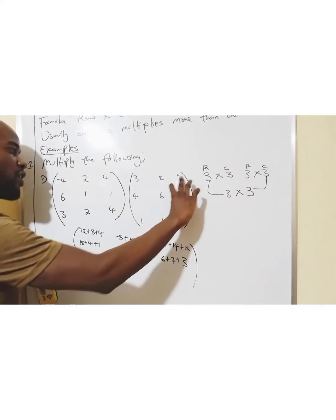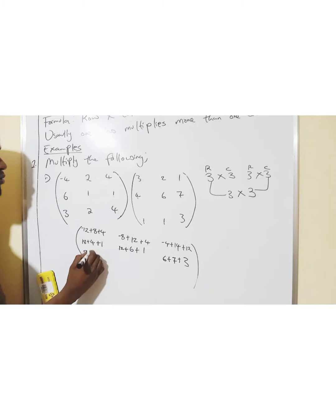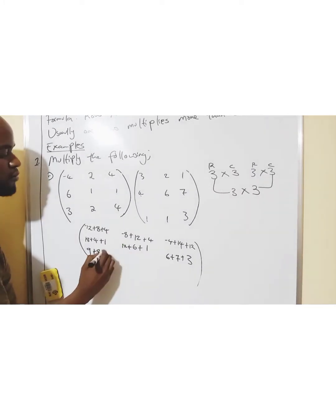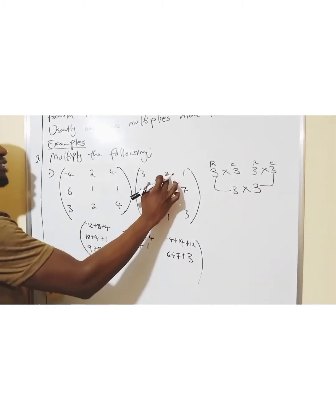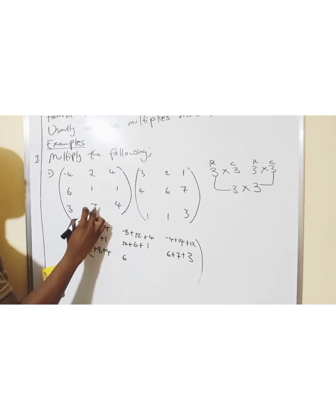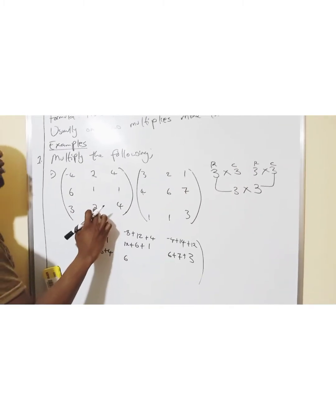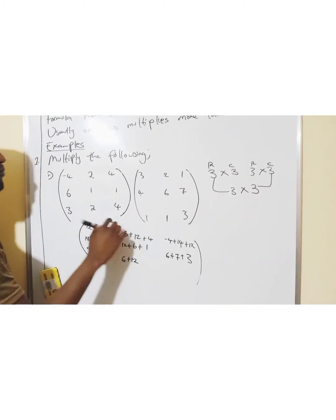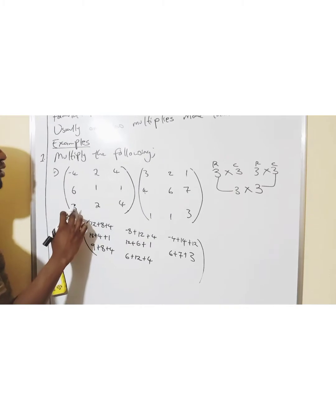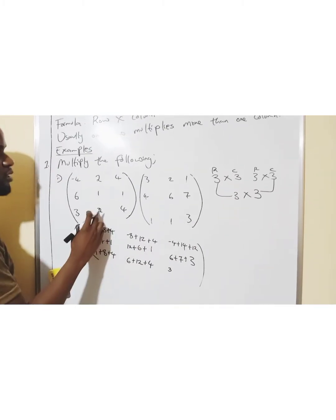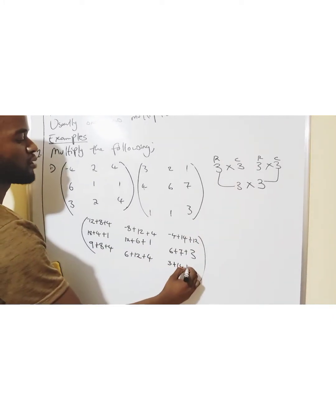I'll multiply the same 3 columns. So, 3 times 3 is 9. 2 times 4 is 8. 4 times 1 is 4. Again, the same row — this column. 3 times 2 is 6. 2 times 6 is 12. 4 times 1 is 4. Last column: 3 times 1 is 3. 2 times 7 is 14. 4 times 3 is 12.